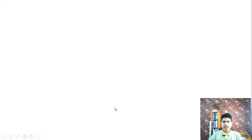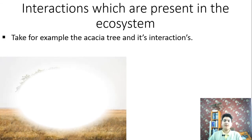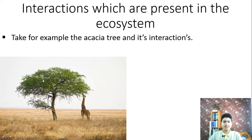In the biological hierarchy, at the level of the ecosystem, every organism interacts with other organisms. Take for example an acacia tree — it interacts with soil microorganisms associated with its roots, and it also interacts with the insects that live on it and with animals that eat its leaves and fruit. In this picture, the animal is a giraffe.